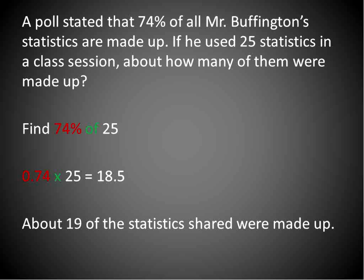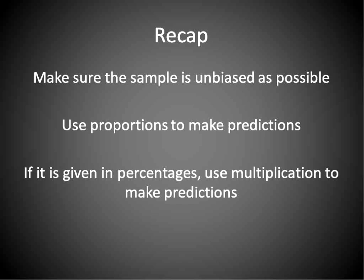It's an estimate. Whenever you're making a prediction about the future, you probably want to use the word 'about' because it's not going to be exact — you're making a prediction based on a small sample size. That's basically all there is about sample size and predictions. Make sure that the sample is as unbiased as possible. Use proportions to make predictions. And if it's given in a percentage, just use multiplication to make predictions. Hopefully that lesson has been helpful for you. Have a wonderful day.